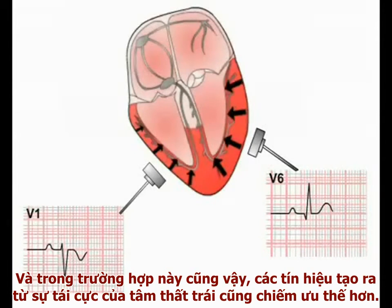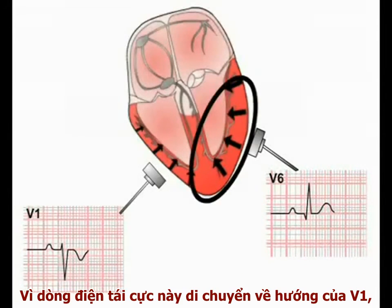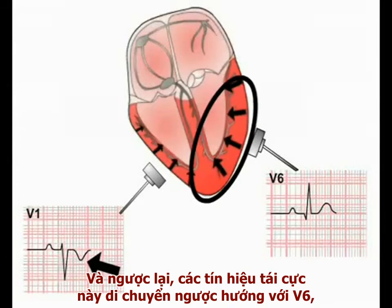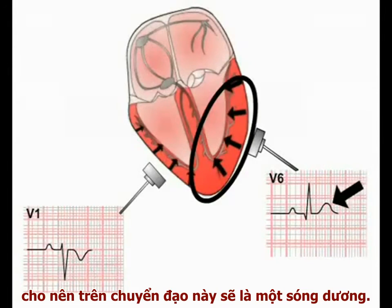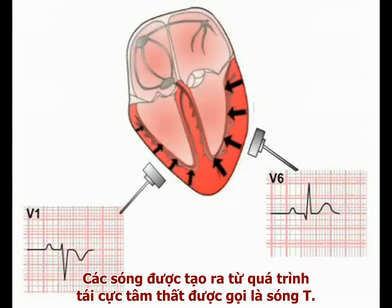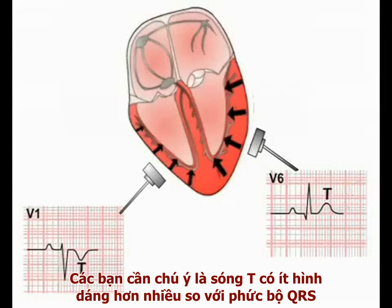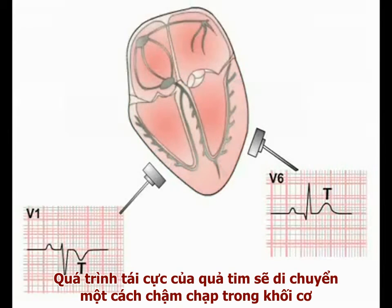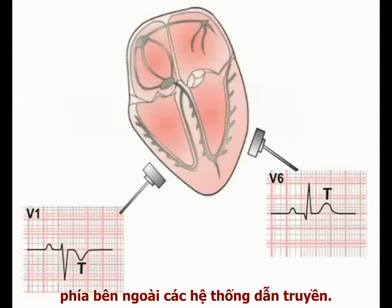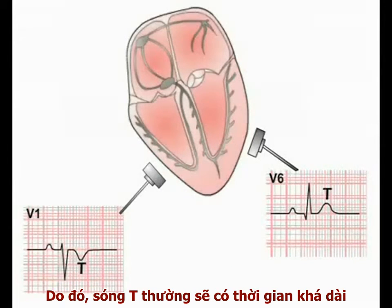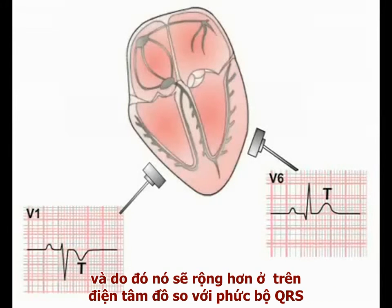The deflection produced on an ECG by ventricular repolarisation is again dominated by the signal from the left ventricle. As this repolarising current is moving towards V1, the deflection produced is negative in this lead. In contrast, this repolarising signal is moving away from lead V6, producing a positive deflection. The deflection produced by ventricular repolarisation is termed a T-wave. Note that the T-wave has a very different morphology to the QRS complex — cardiac repolarisation spreads relatively slowly through the muscle mass outside the conducting system, hence the T-wave is considerably longer in duration and therefore broader on the ECG paper compared to the QRS complex.